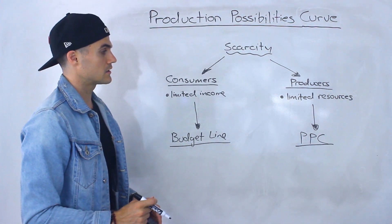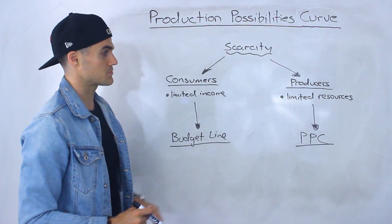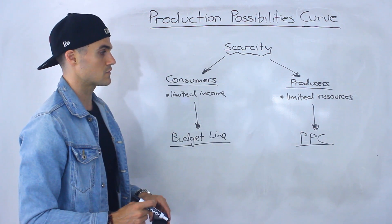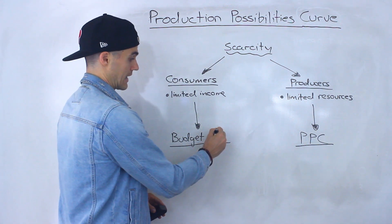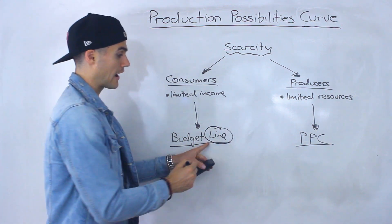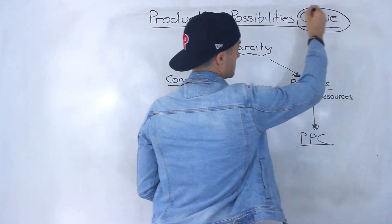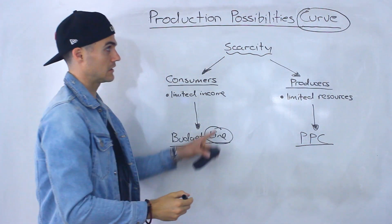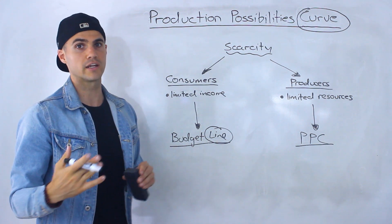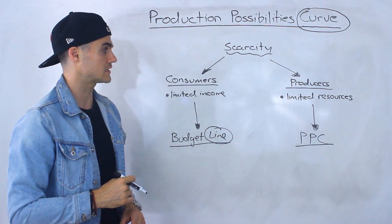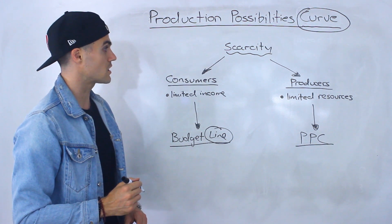It's going to be a similar process to the budget line and the production possibilities curve, but there are going to be a few differences. One of the bigger differences is that while the budget line is a line, this here is going to be a production possibilities curve — it's going to be a curve. That's going to account for some differences relating to the opportunity costs, but we'll get into more detail on that as the video goes on.